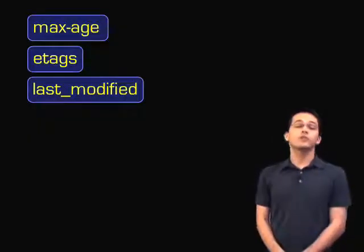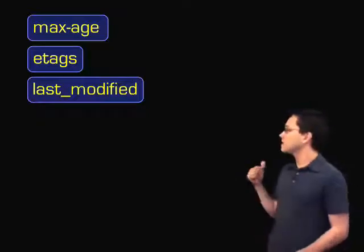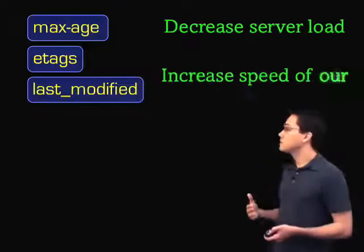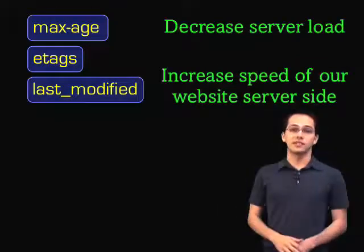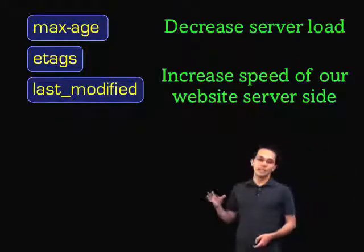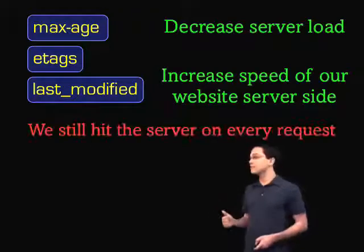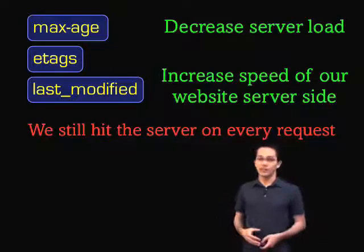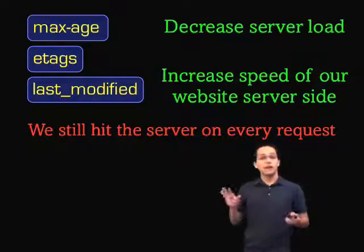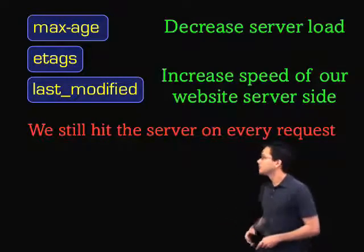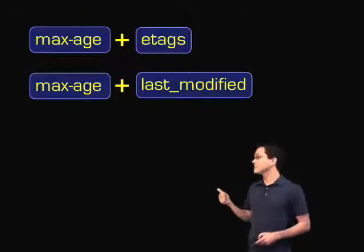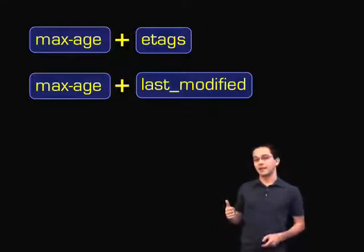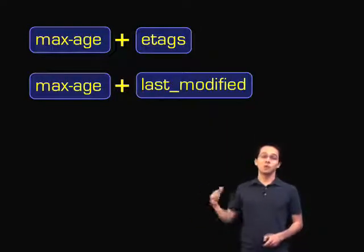Using a reverse proxy cache and taking advantage of these three headers can really decrease our Rails application server load and speed up our website responsiveness. However, with ETags and last-modified, we're still hitting the server on each request to verify the headers are valid — that's not ideal. What we can do is combine these: use max-age with ETags or max-age with last-modified, and that's going to take even more load off our server.